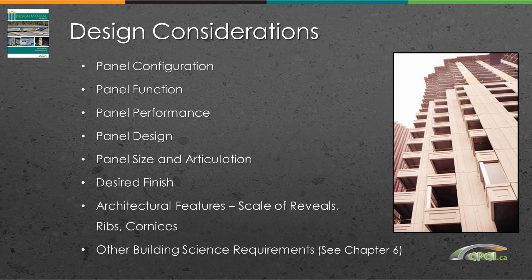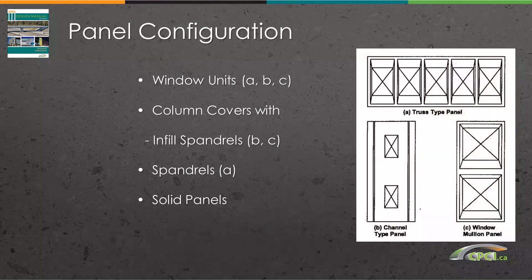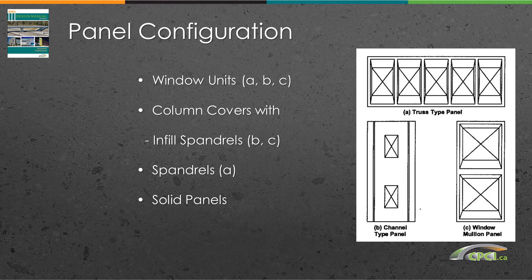Panel size is determined by a number of factors and will dictate how the panels are connected to the structure. Key questions include: How will the panels move relative to the structure? What type of finish is desired? Can local precasters produce this finish with uniformity? What architectural features — ribs, reveals, cornices — does the owner want? Are there special building science requirements such as pools, arenas, hospitals, or clean rooms? Will the panels be window units? Will they span column to column, act as spandrels, or be solid panels?